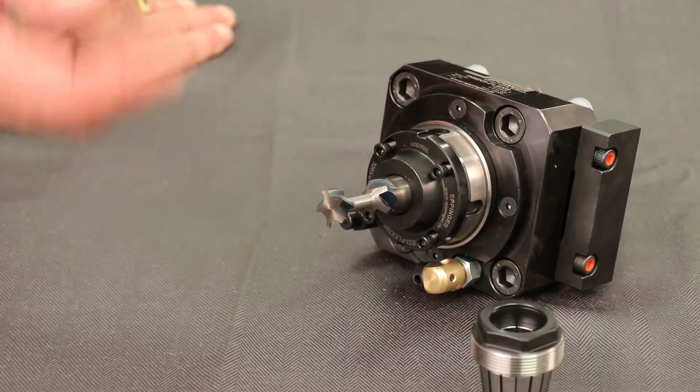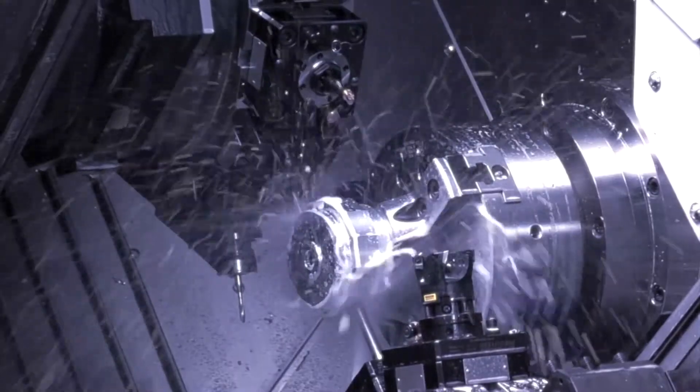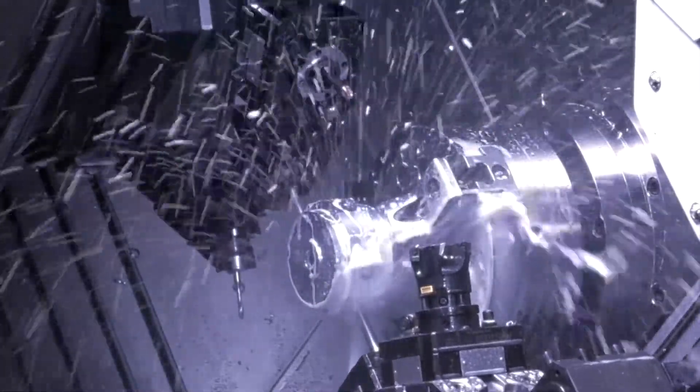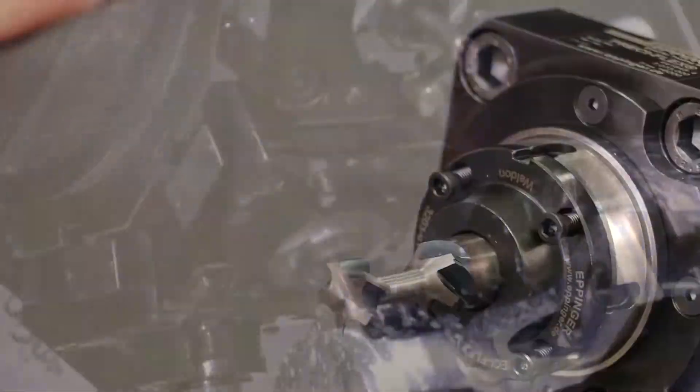And once that is done, now you're able to machine with that. There is no loss in accuracy. At an inch and a quarter, you have less than four tenths runout. That is incredible accuracy for this.